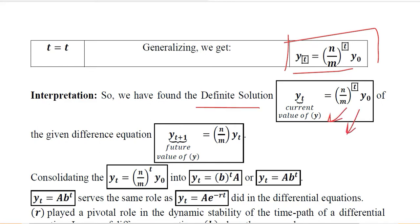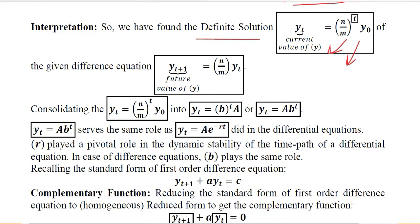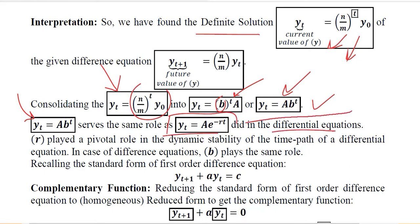This solution can be used as the complementary function of the non-homogeneous case. We can write the expression as b raised to the power t, which is more readable. If we look at this expression, it is quite similar to what we had in the differential equations — that was the solution of the homogeneous case of differential equations. Instead of b, we have an exponential function as in differential equations, and instead of the exponent being minus r·t, the power here is simply t.